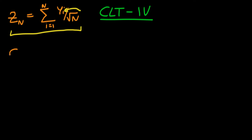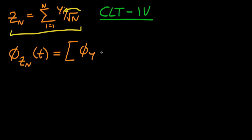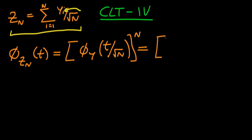We can use that to find the characteristic function of Z_n in terms of the parameter t. A key property of characteristic functions is that if random variables are independent, then the characteristic function of their sum is the product of the individual characteristic functions. So it's the product of the characteristic function of each Y, but we need to reparameterize using t over √n because of that factor at the bottom, giving us the whole thing to the power n.